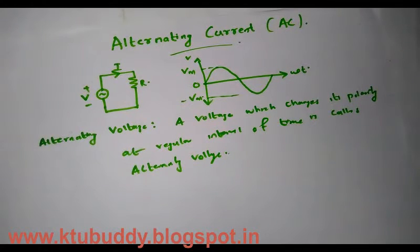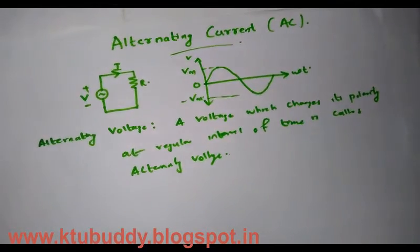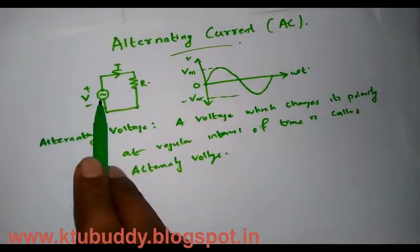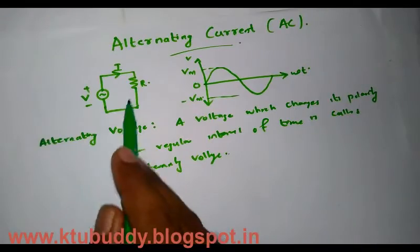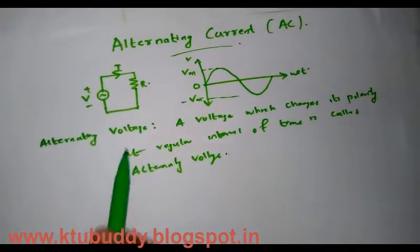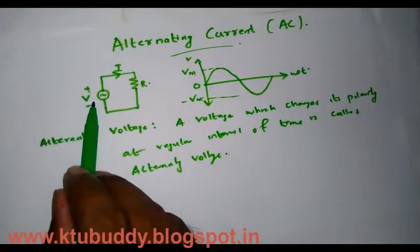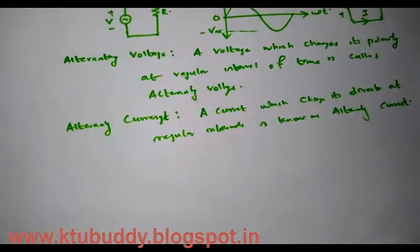During the first half cycle, the current flows from positive to negative in one direction, and after a certain time the current changes its polarity.